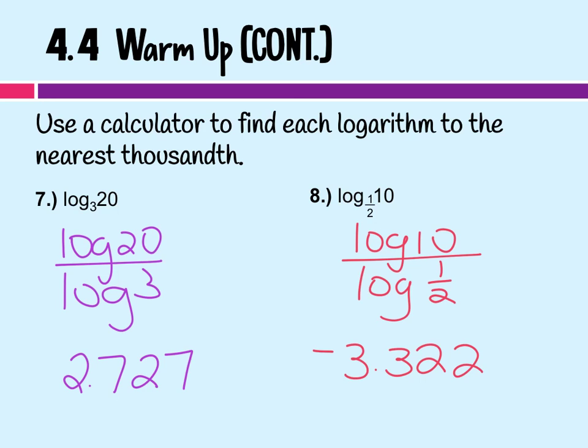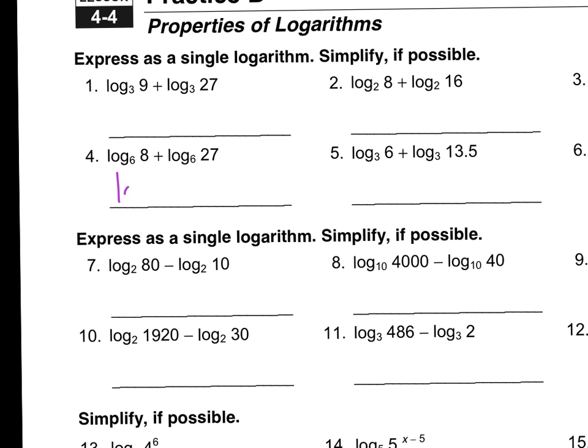Okay. All right. When I combine these, I get log base 6 of 8 times 27, which becomes 216. And then 216 is 6 times 6 times 6, which is 3 sixes, which gives you 3.